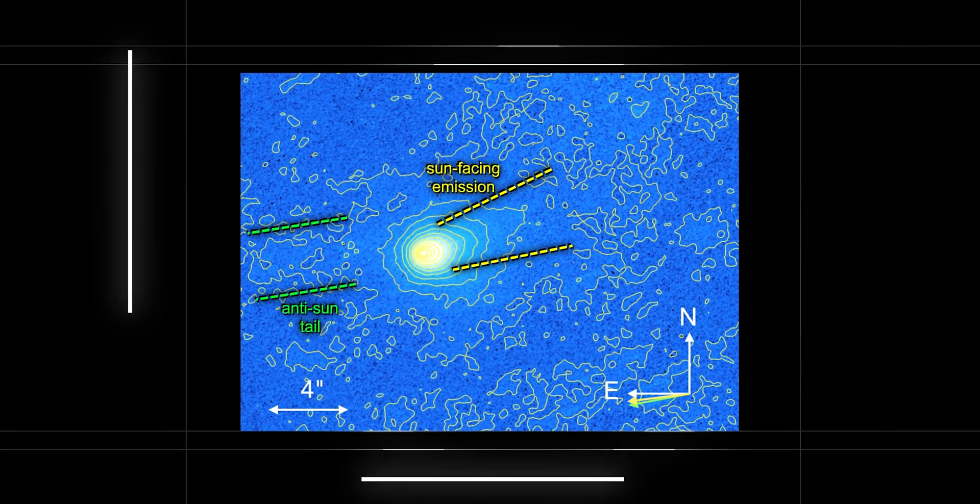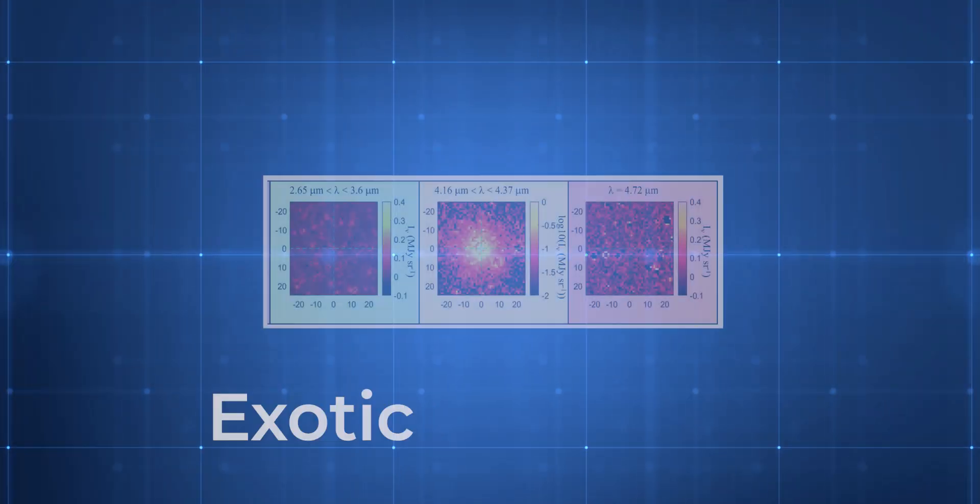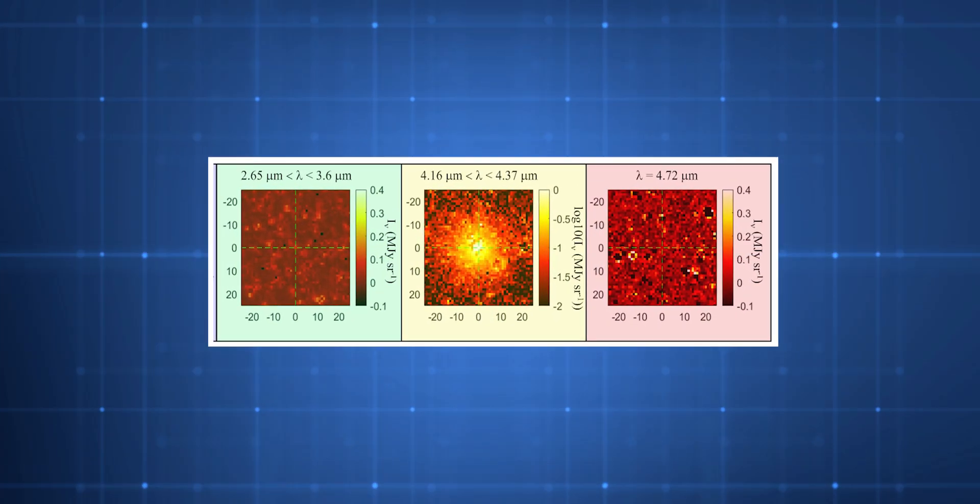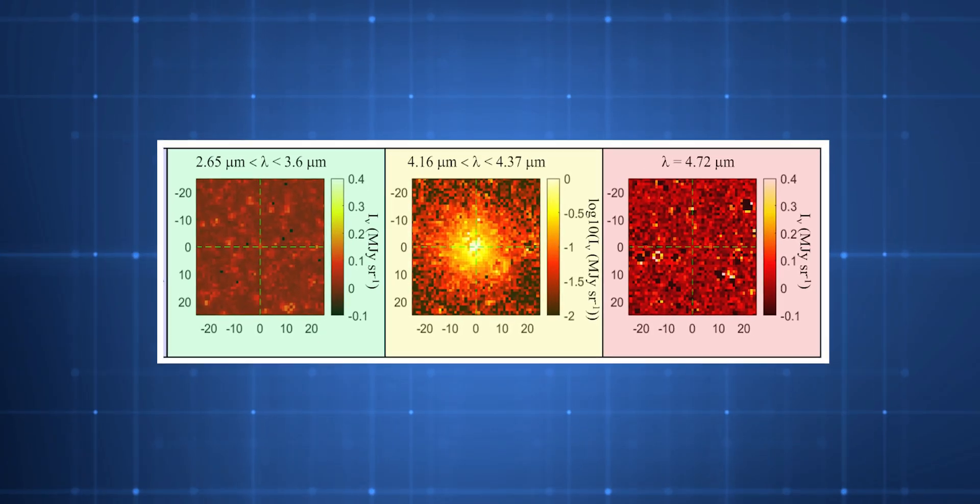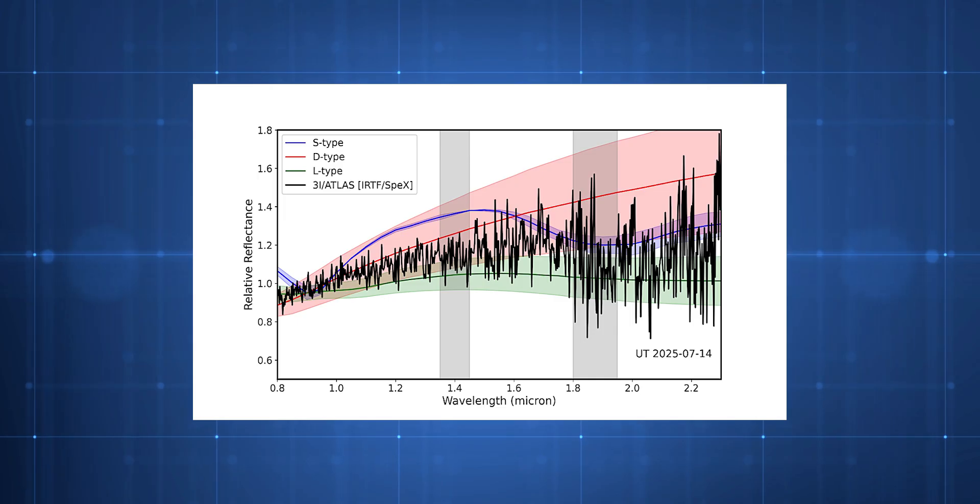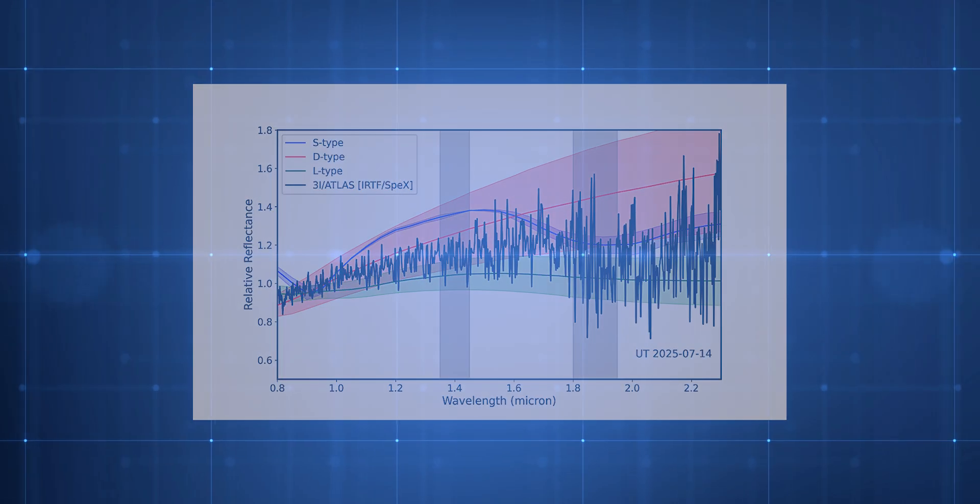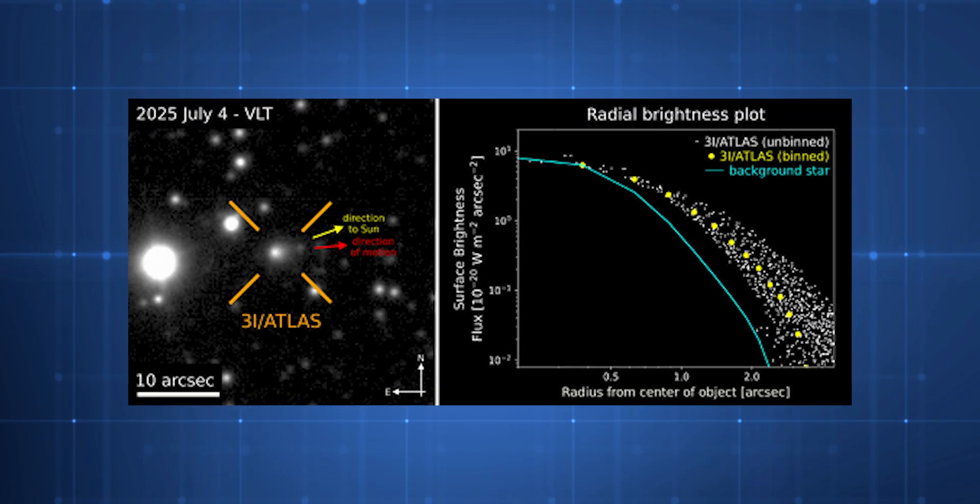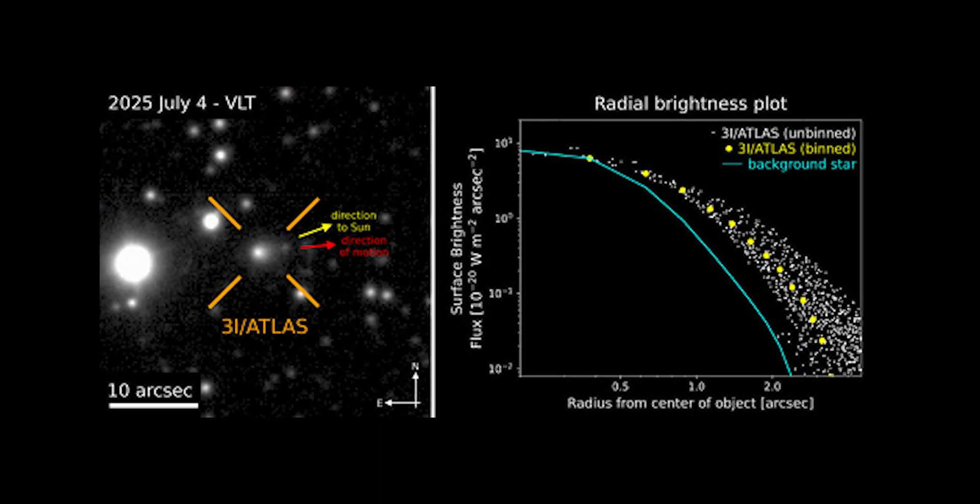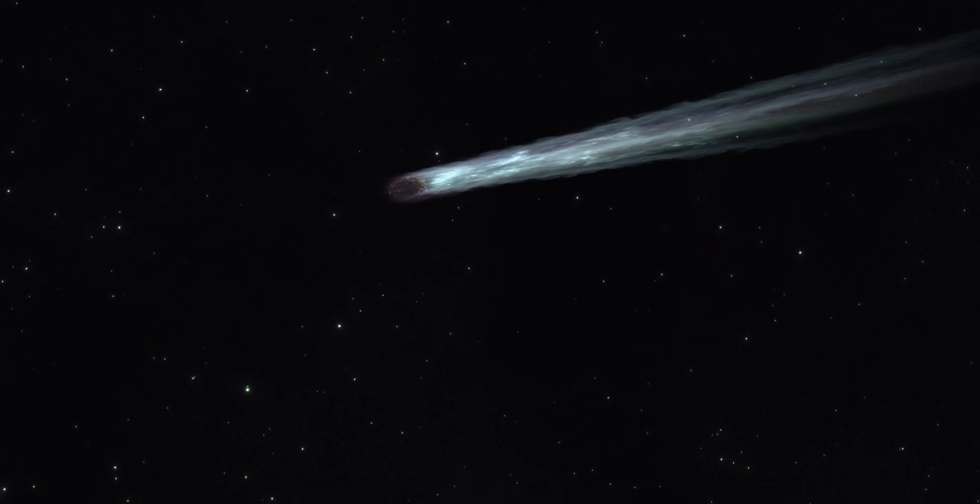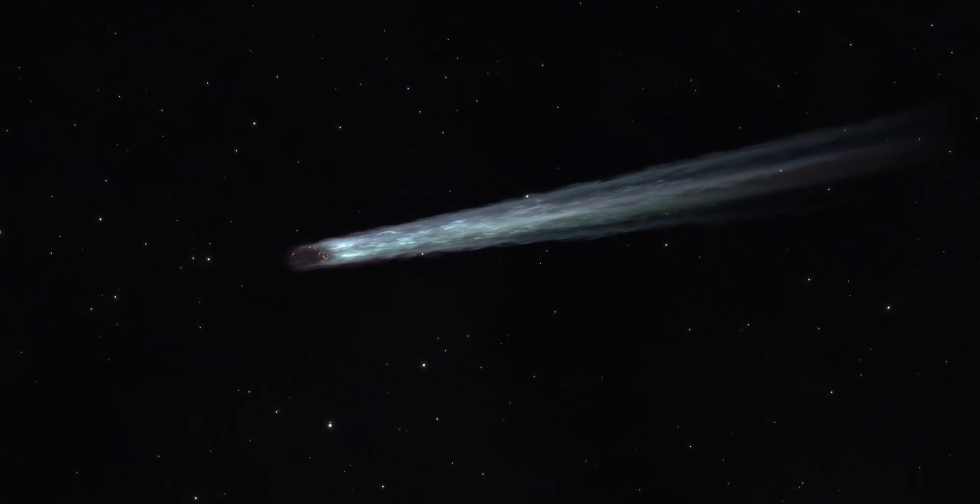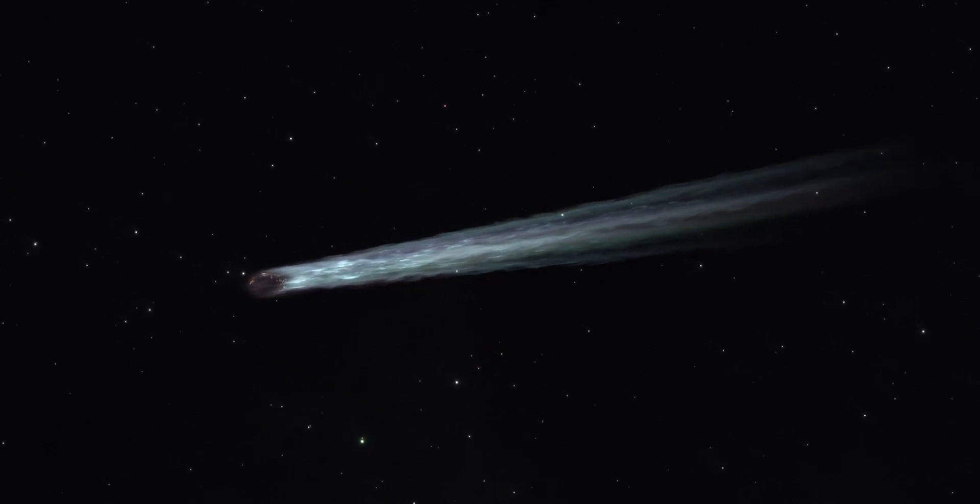That early activity told astronomers two things. First, 3I Atlas carried a reservoir of exotic ices, materials that had remained stable for billions of years in the deep cold between the stars. Second, its chemistry was already unlike anything local. As new measurements arrived, its visual magnitude rose from about 20 to 19.3, roughly five times brighter than early models predicted. No one expected that much energy from so far out. If it could shine like this at four astronomical units, what would happen when it reached two? Or one?